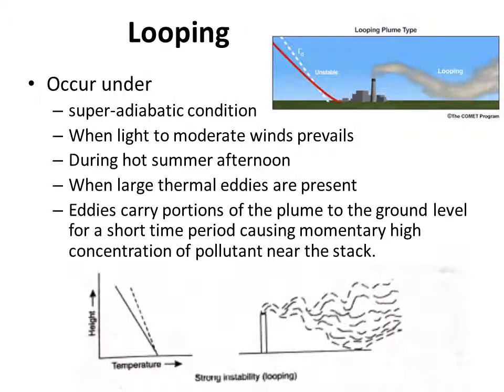Looping is a type of plume behavior which occurs under super adiabatic conditions. In our earlier classes we have seen that super adiabatic condition is when the environmental lapse rate is greater than the adiabatic lapse rate. It occurs when there is light to moderate wind and is usually seen during hot summer afternoons when large thermal eddies are present. Eddies carry portions of the plume to the ground level for a short time period, causing momentary high concentration of pollutant near the stack.